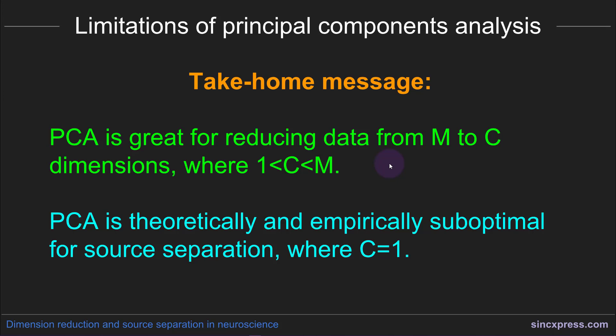In the next section of the course, I will call this two-stage compression and source separation. But the important point here is that PCA is theoretically and empirically—we'll demonstrate this in the next section—suboptimal for source separation where C equals one. So if you're compressing down to one dimension, basically PCA is pretty much always going to give you a suboptimal result that is likely to be not very good, but also very easy to improve. And that is what you will see in the next section of this course.